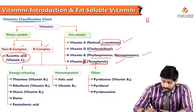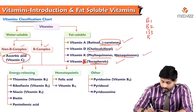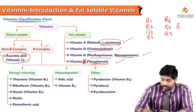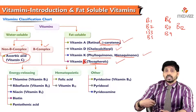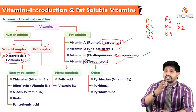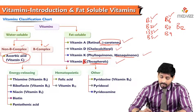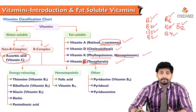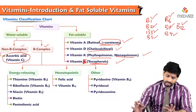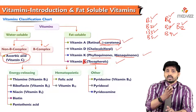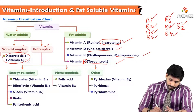The B complex vitamins are: B1, B2, B3, B5, B6, B7, B9, and B12. B1 is thiamine, B2 is riboflavin, B3 is niacin, B5 is pantothenic acid, B6 is pyridoxine, B7 is biotin, B9 is folic acid, and B12 is cyanocobalamin (also called cobalamin). Out of these, the energy-releasing group — involved in ATP production — includes B1, B2, B3, B5, and B7.